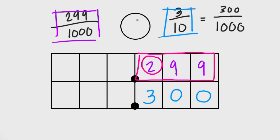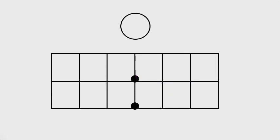So in this case, two hundred ninety-nine thousandths is less than three tenths, because three tenths — or three hundred thousandths — is the bigger number.